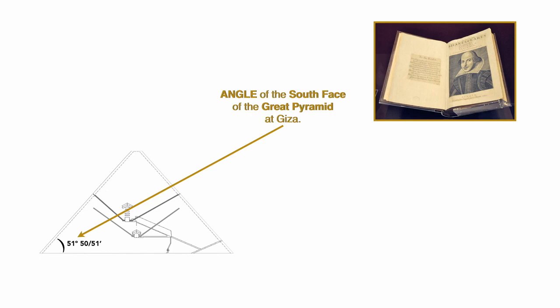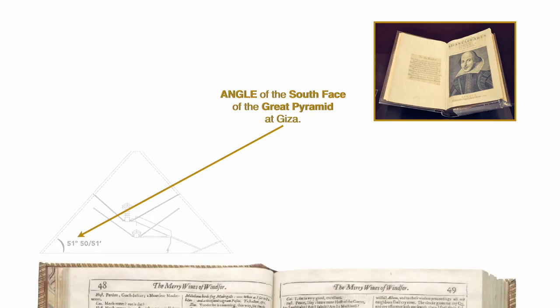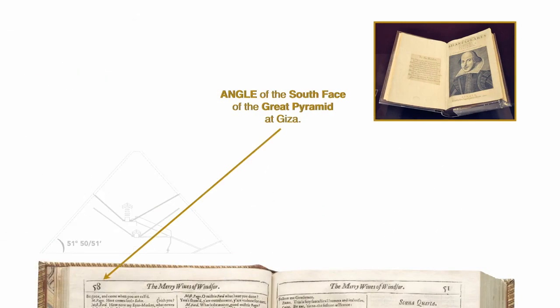Now, the very first page number mistake in the first folio occurs here. It goes from page 48 to 49 to 58 to 51. Well, obviously it should be 50. Note, he's drawing attention to 50 and 51.